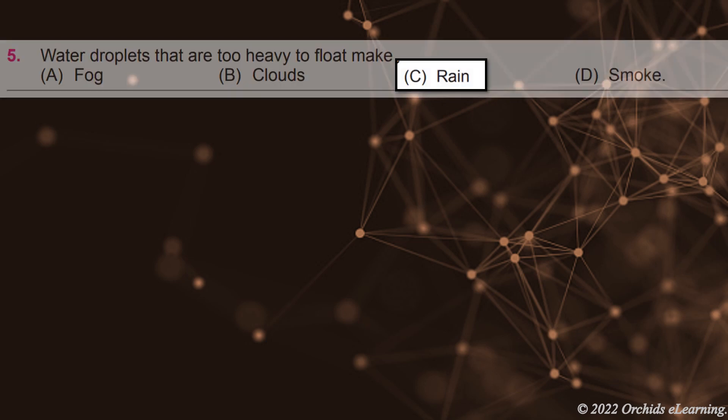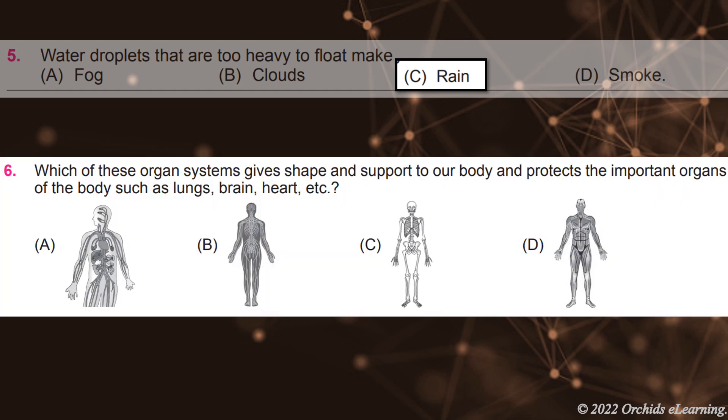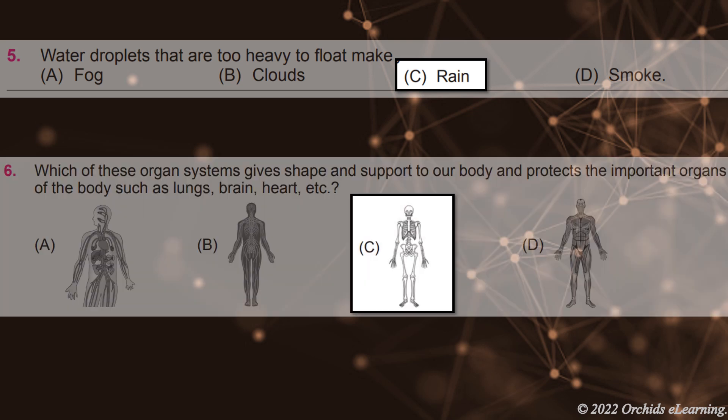Which of these organ systems gives shape and support to our body and protects the important organs of the body such as lungs, brain, heart, etc.? D. Skeletal system.